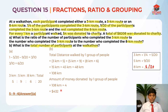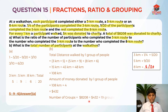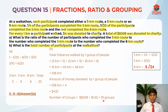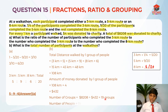Now is where we use the grouping concept. To find the number of groups, I'm going to take $8,208 divided by $432, which gives us 19 groups. In each group there are 20 people, so I'm going to take 20 × 19, which gives us 380.